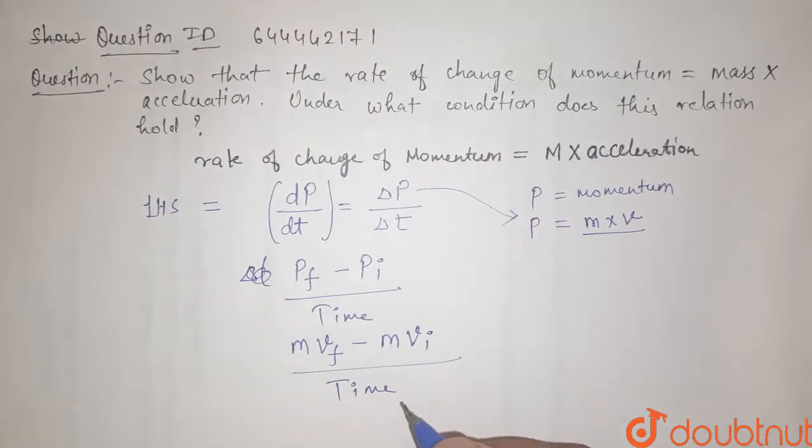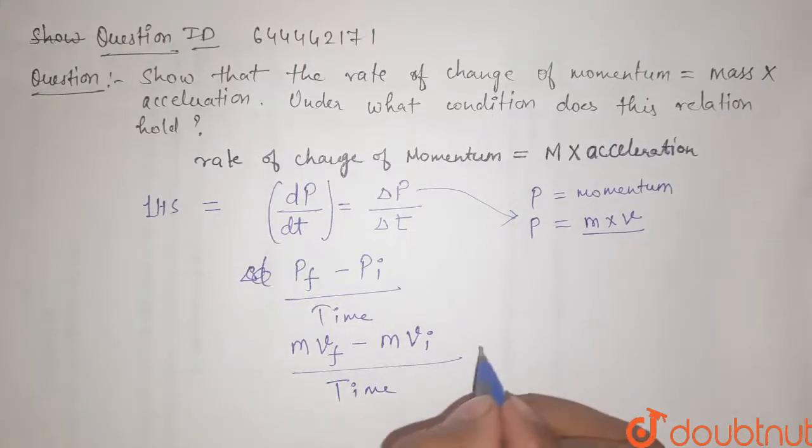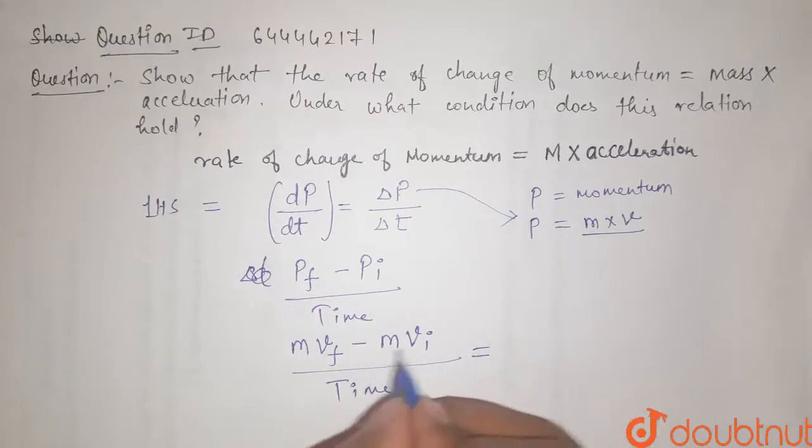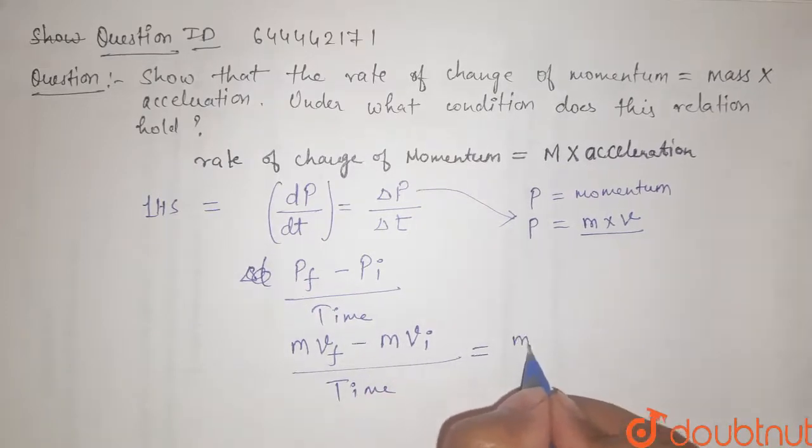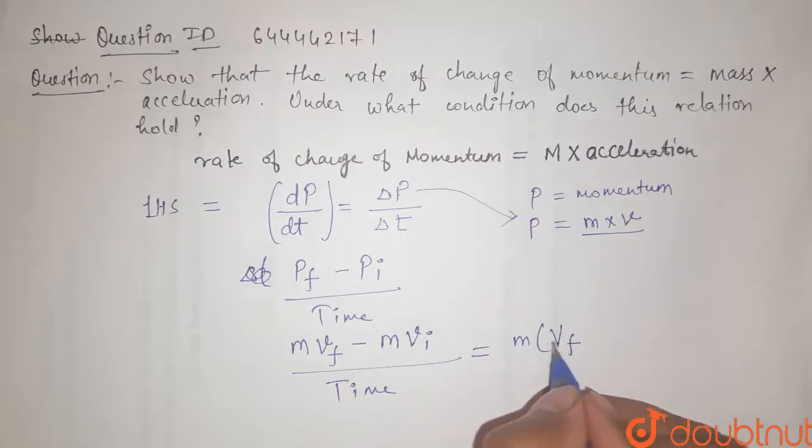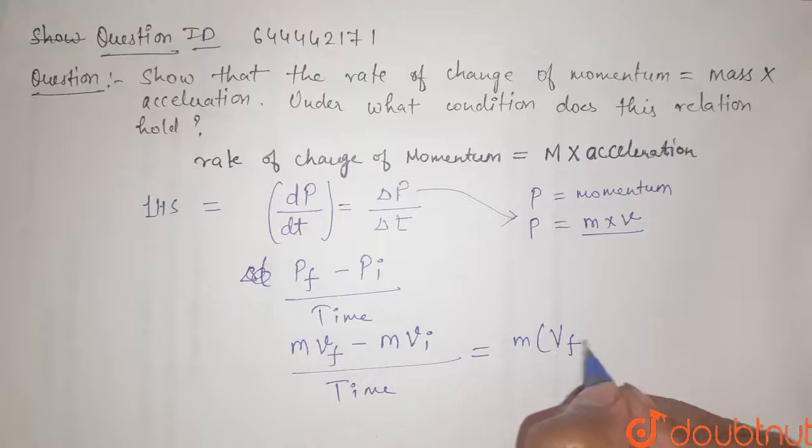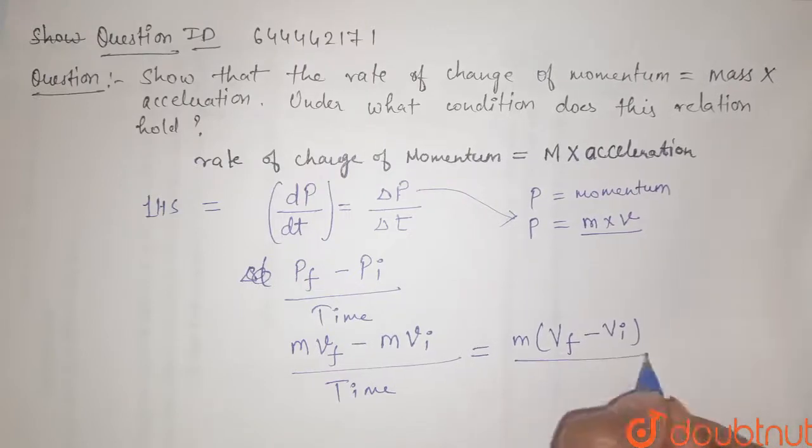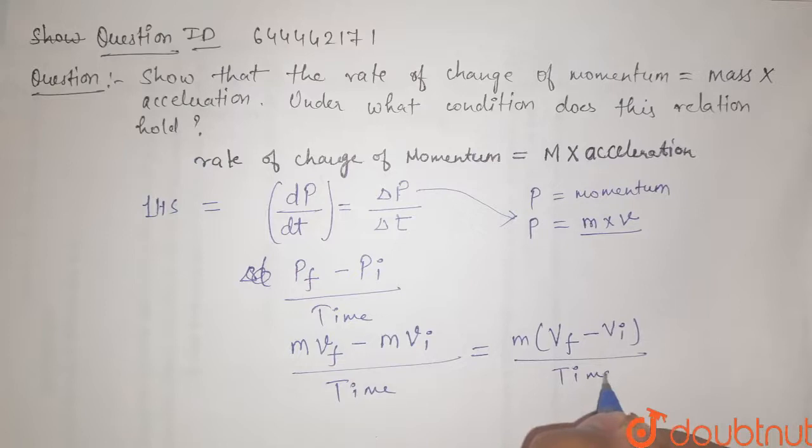So from here what we can do? We can take m as common. So, it will be m multiplied by v final minus v initial divided by time.